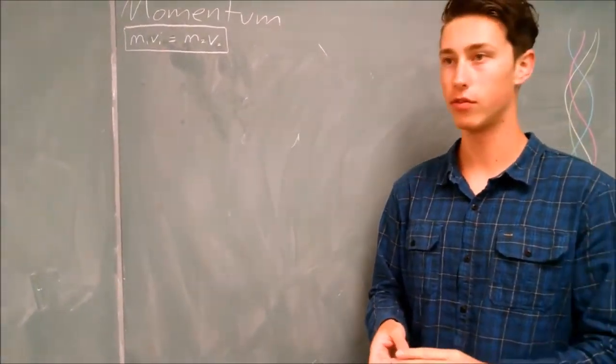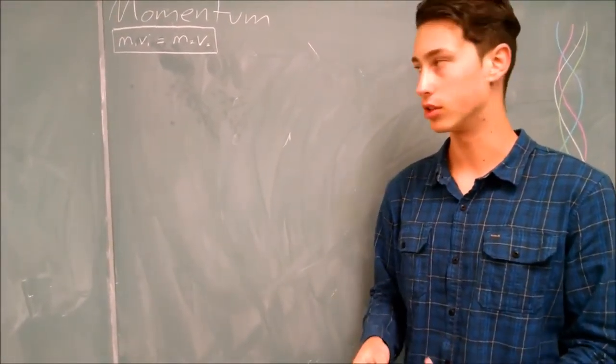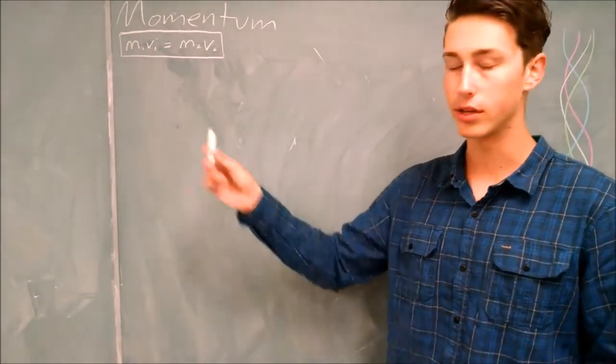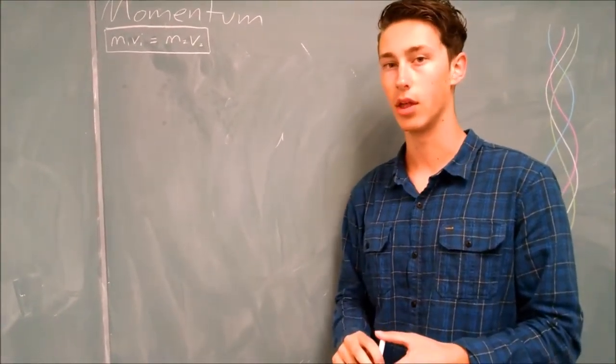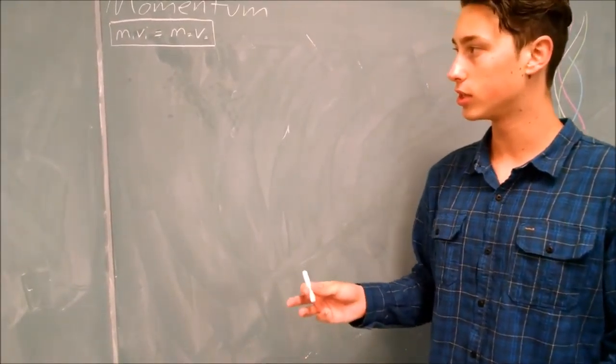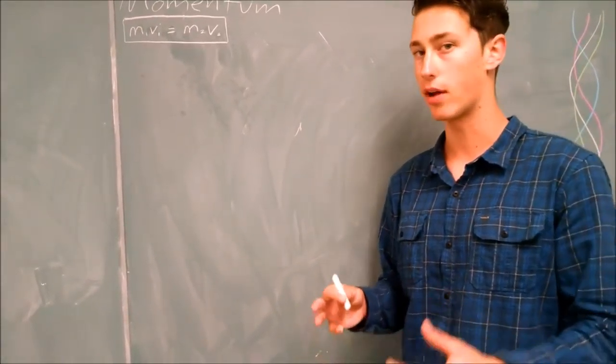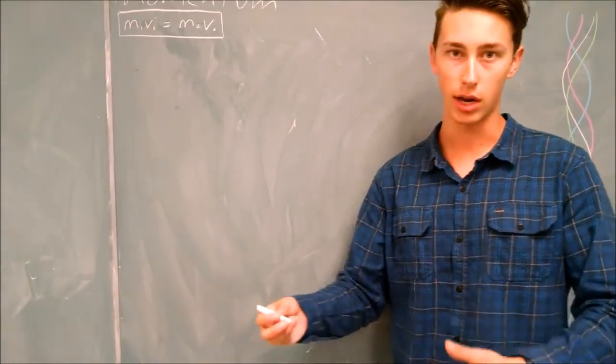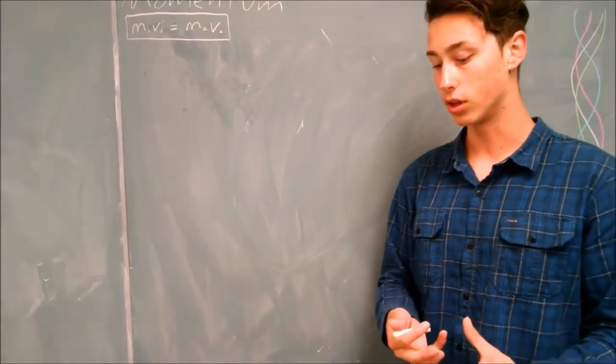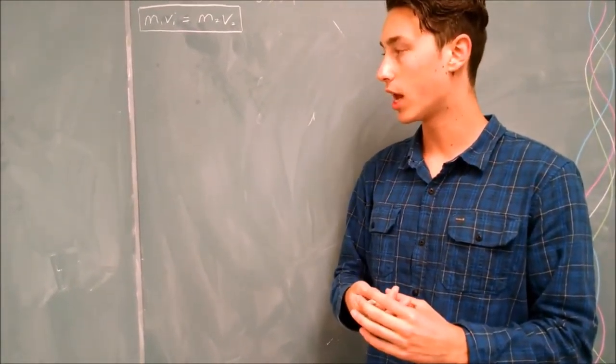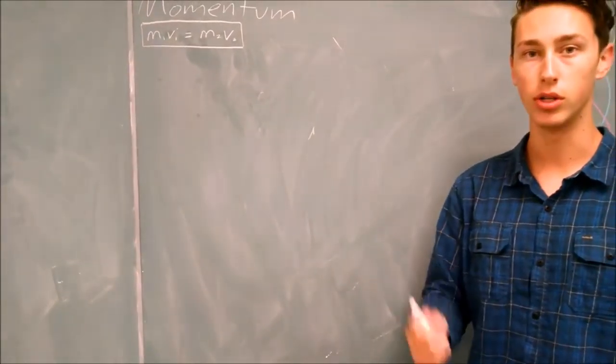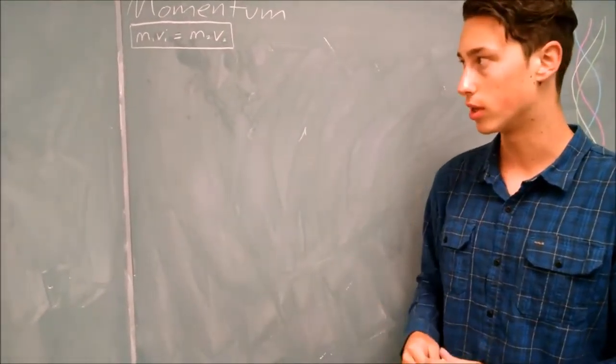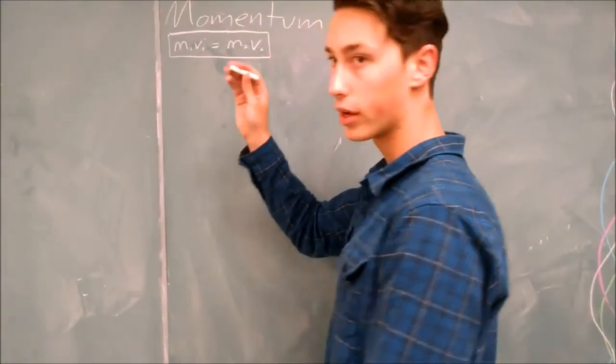So now that we've solved for the velocity of the system after the collision, we can solve for the velocity of the potato before the collision using the conservation of momentum. Now you may be asking yourself, why didn't we just set the kinetic energy of the system after the collision equal to the kinetic energy of the potato before the collision? Well, a lot of energy was actually lost to heat on the impact, which is why momentum is always conserved in the collision, so we're going to use momentum here. So if we just plug in the values,